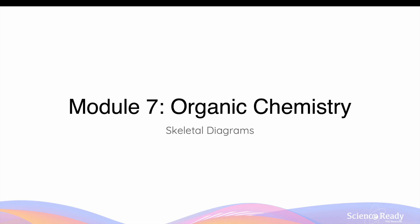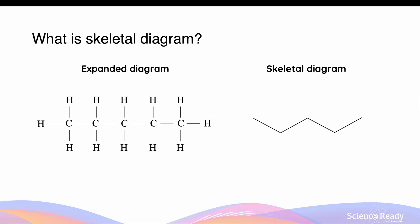Hi everyone. In this video we are going to be going through how to draw skeletal diagrams for organic compounds and look at how to name organic compounds looking at their skeletal diagrams. A skeletal diagram is simply the simplified, condensed representation of an organic compound. It is an easy way to work out the nomenclature and represent an organic molecule using this method, as compared to drawing the expanded diagram for the entire molecule.